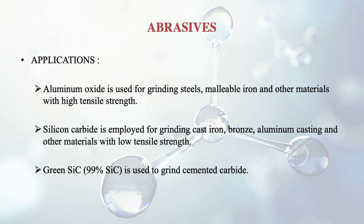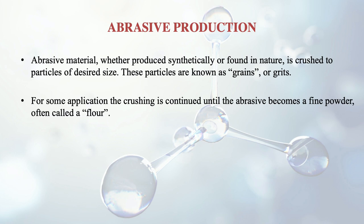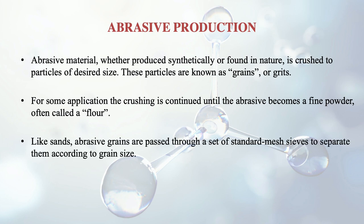Abrasive material, whether produced synthetically or found in nature, is crushed to particles of the desired size. These small particles are known as grains or grits. For some applications, crushing is continued until the abrasive becomes a fine powder. Abrasive grains are passed through a set of standard mesh sieves to separate them according to grain size. Grain size is designated by the mesh of the finest standard sieve through which the grains will pass, described by the number of meshes per linear inch. Standard meshes range from 10 to 600.